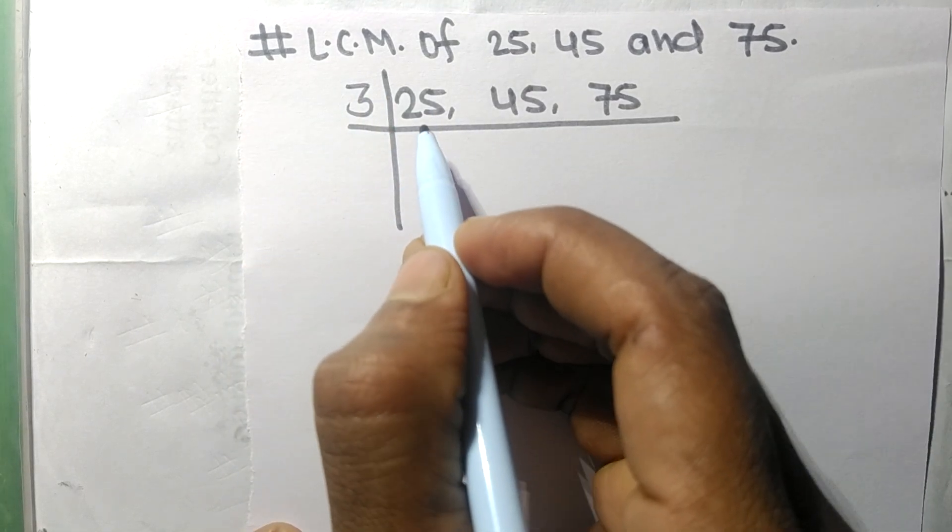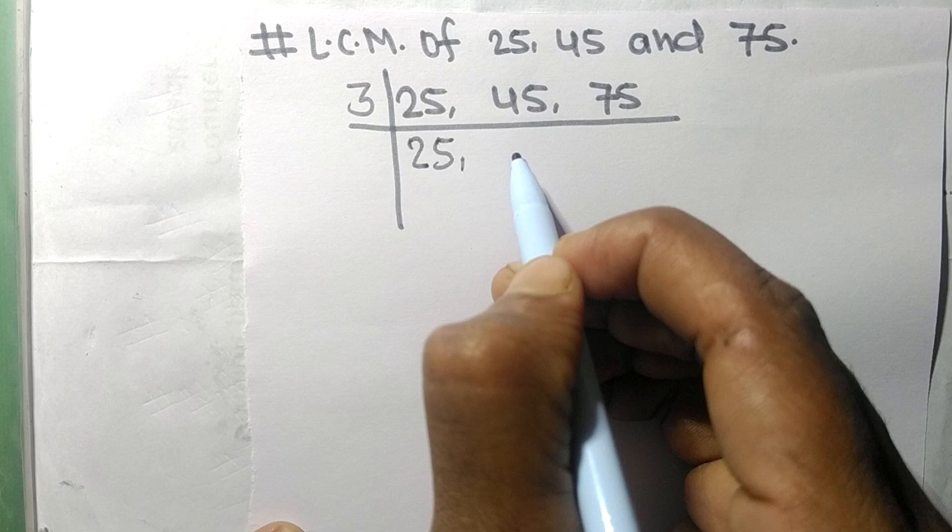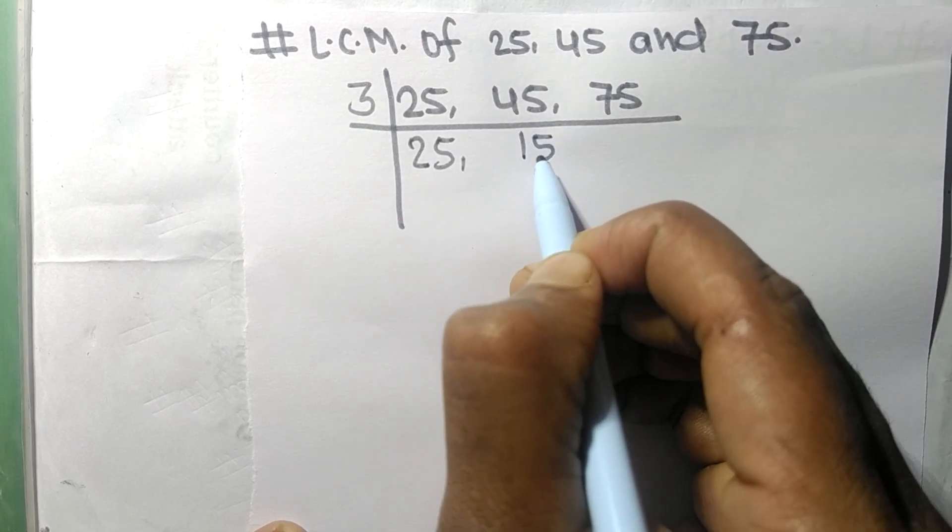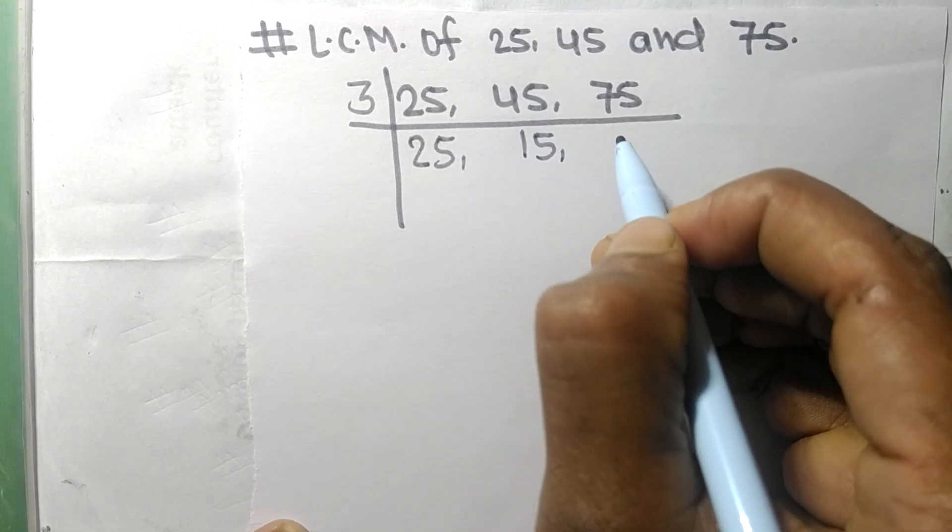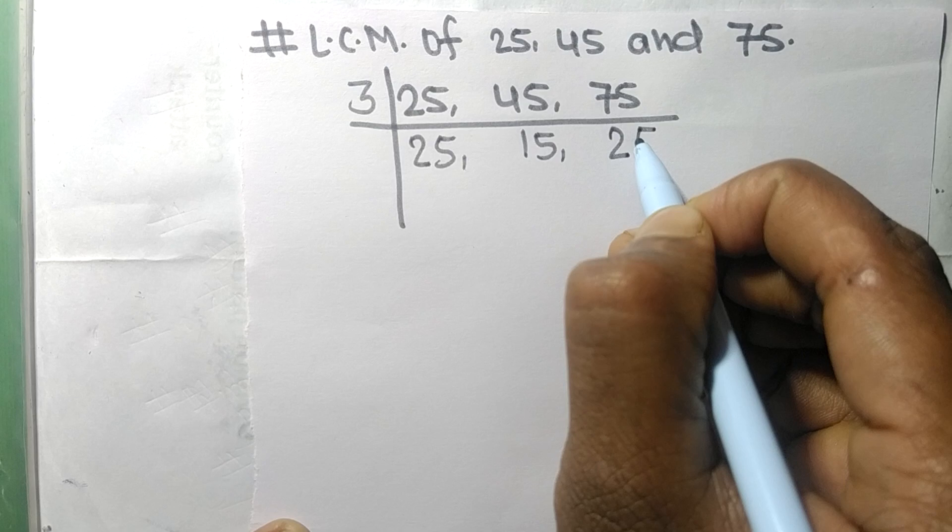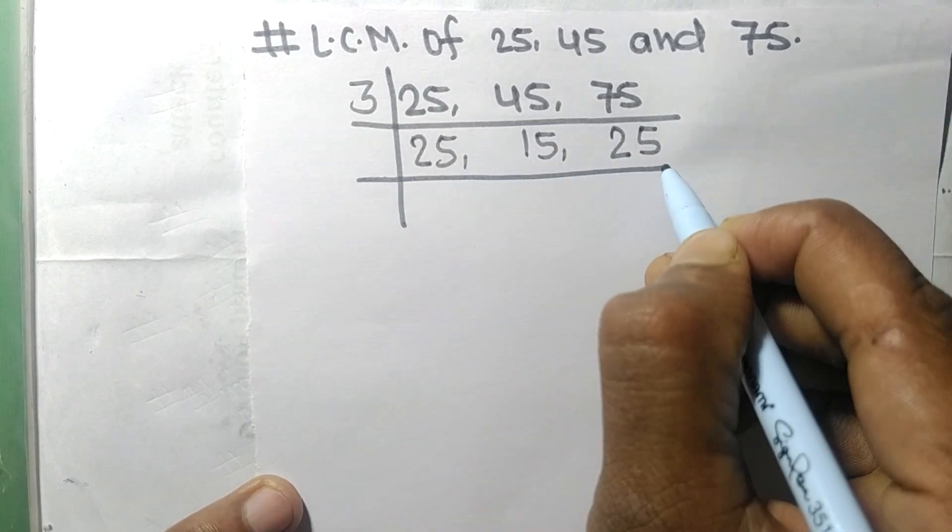So 25 is not divisible, so it stays the same. 3 times 15 equals 45, and 3 times 25 equals 75.